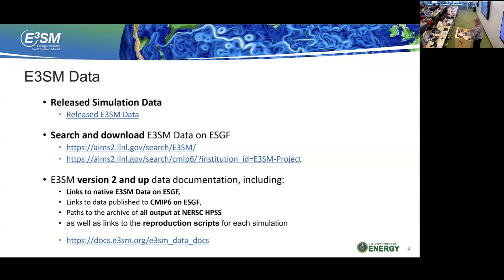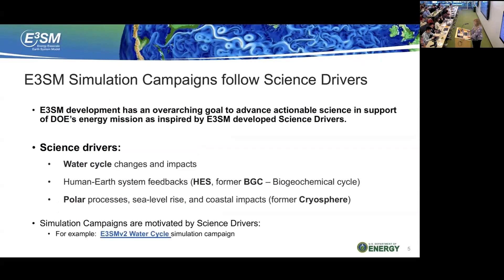I also want to point you to the documentation on our centralized docs.e3sm.org space, where version 2 data and up will be documented. This is a very nice new documentation that links not only to ESGF and the CMIP6 project on ESGF, but also to the HPSS and provides reproduction scripts for every simulation. The simulation campaigns follow the science drivers — water cycle change and impacts, human Earth system feedbacks (shortened to HES), and for Phase 1 and Phase 2 it was more broadly biogeochemical cycles. The third driver, formerly cryosphere, is now more focused as polar processes, sea level rise, and coastal impacts.